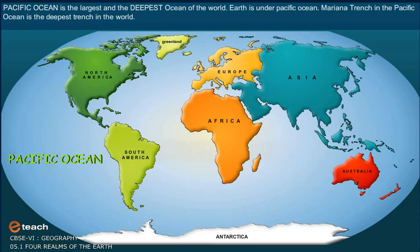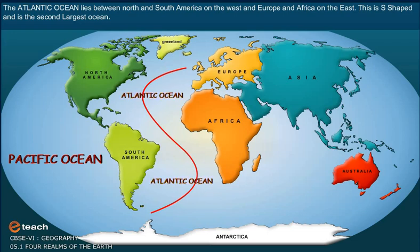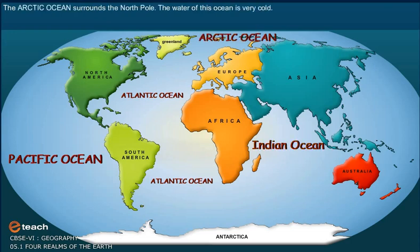The Atlantic Ocean lies between North and South America on the west, and Europe and Africa on the east. It is S-shaped and is the second largest ocean. The Indian Ocean is situated to the south of India. The Southern Ocean is formed by the southern parts of the Indian, Pacific, and Atlantic Oceans. The Arctic Ocean surrounds the North Pole, and the water of this ocean is very cold.